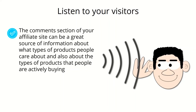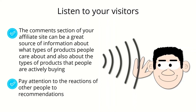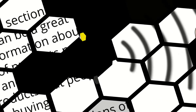Listen to your visitors. The comment sections of your affiliate site can be a great source of information about what types of products people care about and also about the types of products that people are actively buying. Pay special attention to recommendations among customers in the comments section, pay attention to the reactions of other people to those recommendations, then apply what you've learned about people's preferences and get ready to start creating awesome affiliate content.